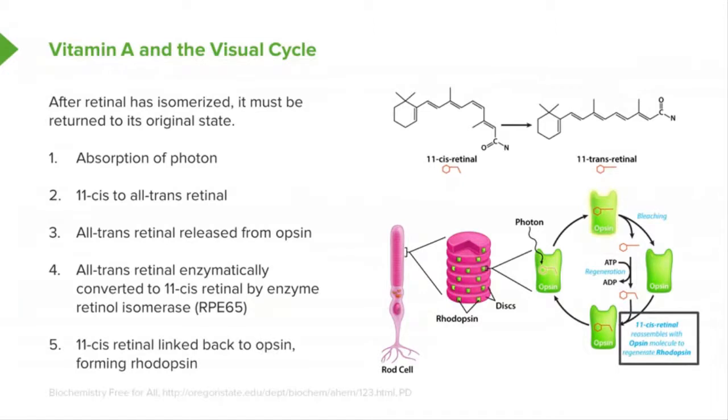The 11-cis retinal, after it's been formed by this process that I've just described to you, is then linked to the opsin and causes the formation of rhodopsin in the case of rod cells or photopsin in the case of cone cells.